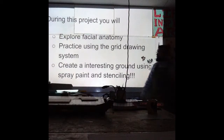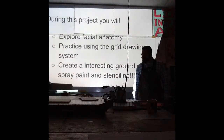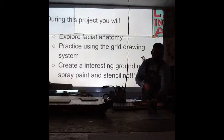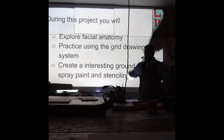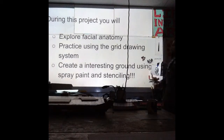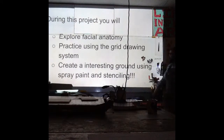You can practice using the grid drawing system. Has anybody used the grid drawing system before? The grid drawing system is pretty much where you have a grid, put the picture on the grid, and draw it. If the eye is in square 3A, you draw the eye in 3A on your own grid. That's exactly right — it's a way to enlarge a small picture to a large piece of paper. I've broken it down to black and white so there's no shading; it's all high contrast. The final part is we're going to create an interesting ground using spray paint stenciling.